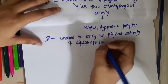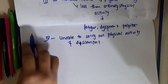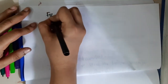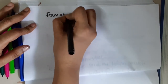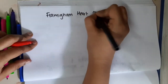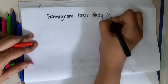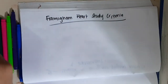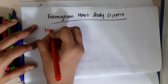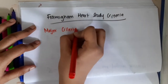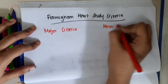Then we have one more important criteria for heart failure, that is the Framingham heart study criteria. According to Framingham heart study criteria, we have major criteria and then we have minor criteria.